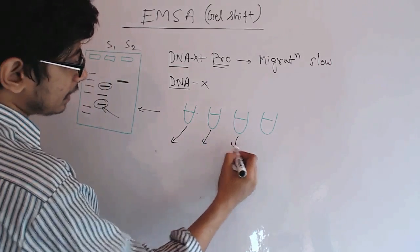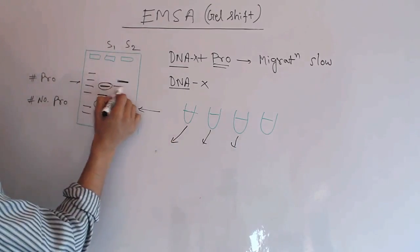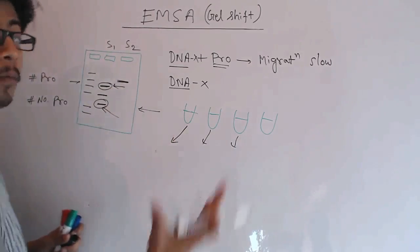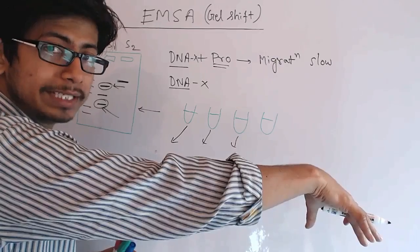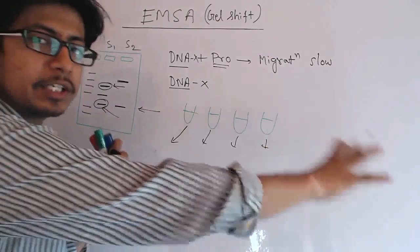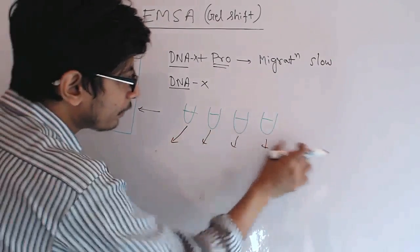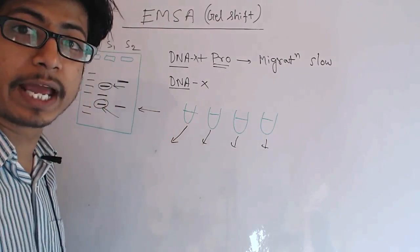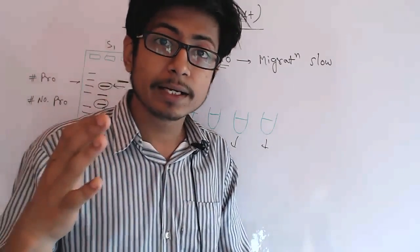Similarly, if you take this third one, let's say you will get the band at this position. That means some more proteins are now involved with the DNA. Now at this fourth, you find the DNA again in this position. That means all the proteins are dissociated.